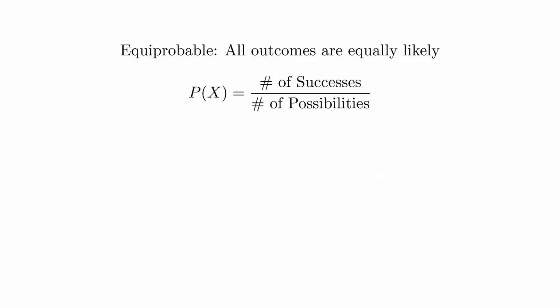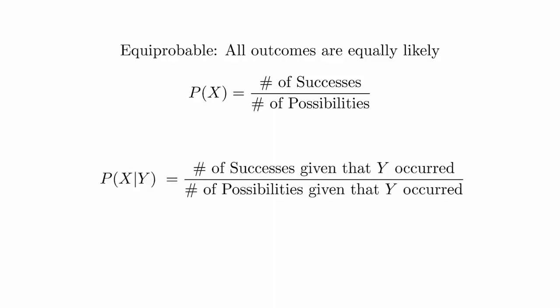Recall that if all the events are equiprobable, then we can compute the probability of event X by taking the ratio of the number of successes to the number of possibilities. This is the formula for a conditional probability. The notation on the left is the probability that event X occurs given that event Y occurred. We can use the same principle for calculating the probability, but we only consider the cases where event Y occurred.